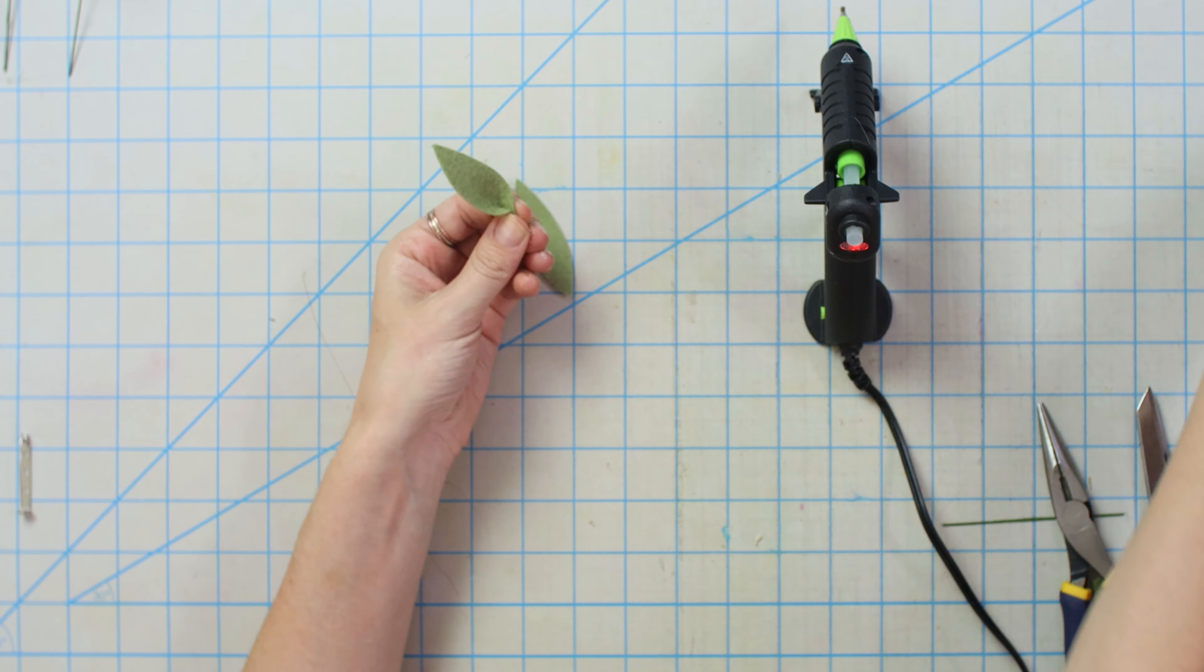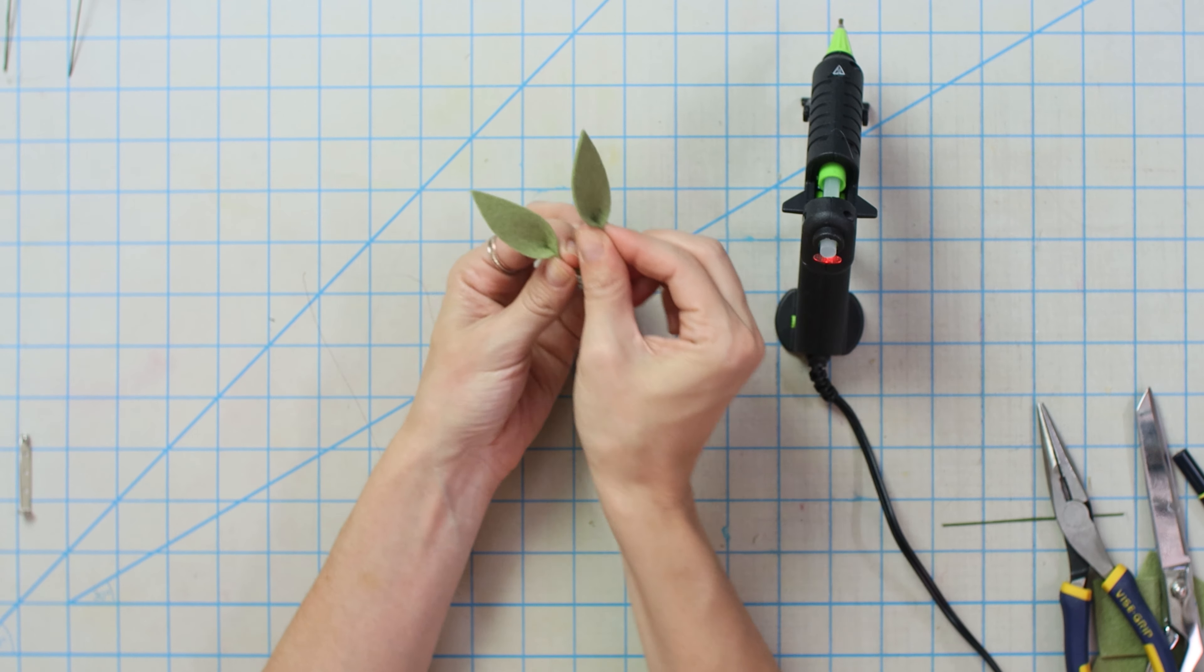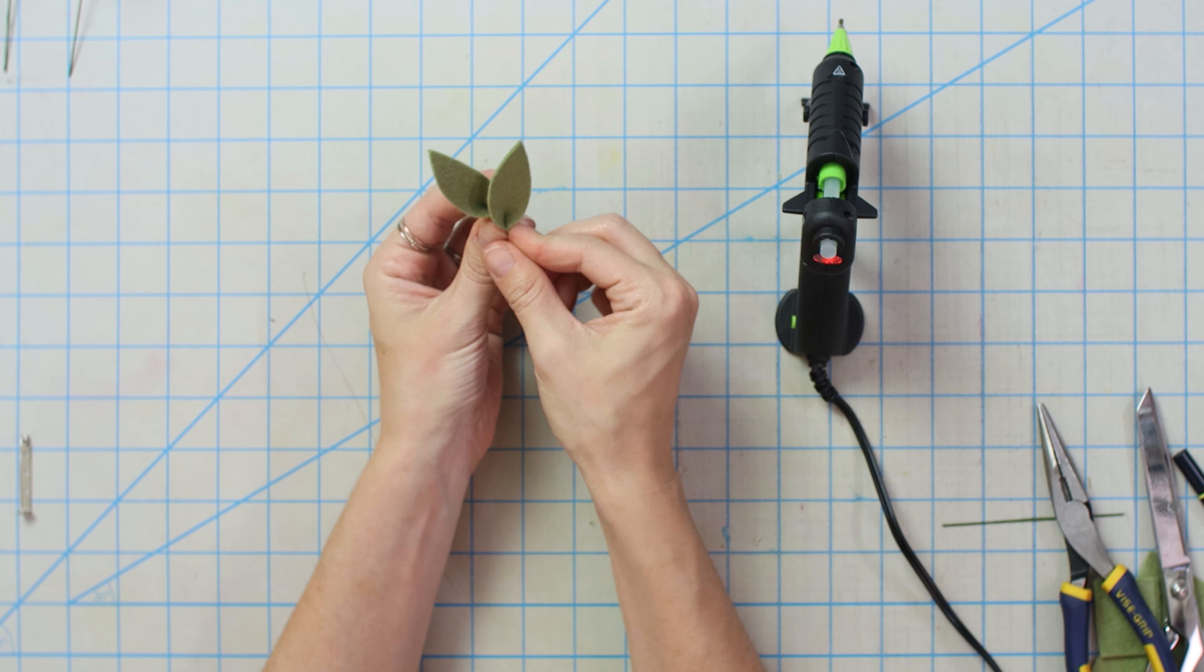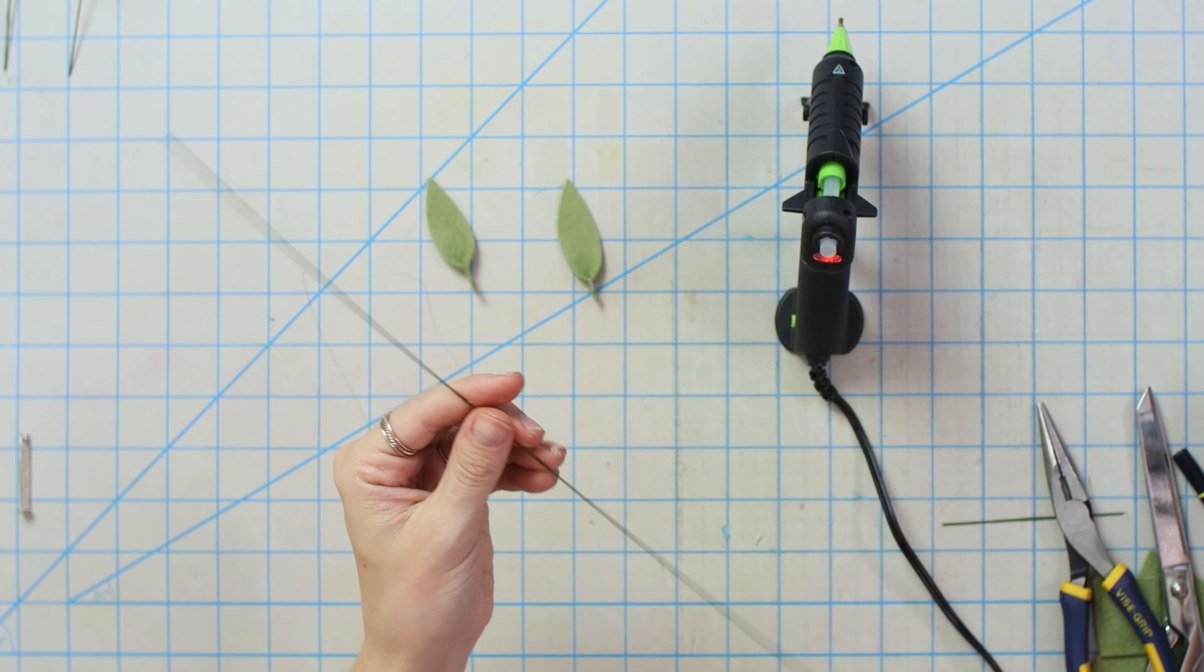So I'm gonna put this aside and we're gonna do some leaves real quick and then we'll assemble it all together. So I've got two leaves here and we're gonna put a little bit of glue and pinch them shut. I'm gonna get rid of some of this stuff.